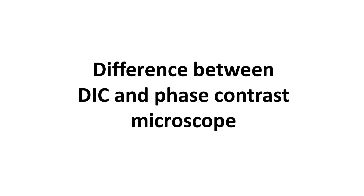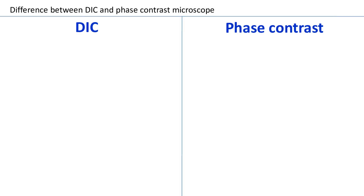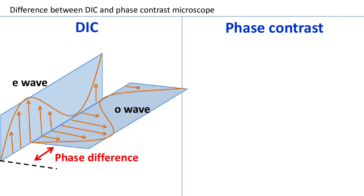Before we end this video, there should not be any confusion with the phase contrast microscope. The phase difference involved in DIC is completely different from the phase difference in phase contrast microscopy. Remember, in DIC the phase difference is between the E wave and the O wave — it's between the electric field vectors of the E wave and the O wave. This phase difference finally results in elliptically polarized light, which then passes through the analyzer and is seen as a bright image.